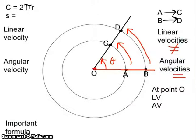Now, what was happening right at point O? At point O, the linear velocity is zero because it traveled zero distance over time. But did it travel zero angle?